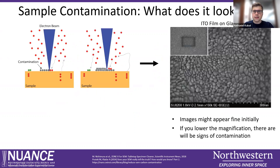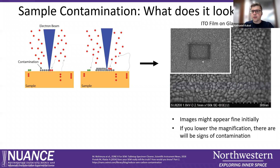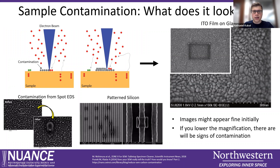These three sources can contribute to sample contamination when you are scanning the electron beam in an SEM. As the beam rasters across the sample, these three factors all contribute to this buildup of a contamination layer where you are scanning. You can see this sort of gray layer that builds up the longer you scan. If you have a dirtier sample versus a cleaner sample, this can be a lot worse. So if you have a dirtier sample versus a cleaner sample, this can be a lot worse, and that's how you get this layer in the SEM.